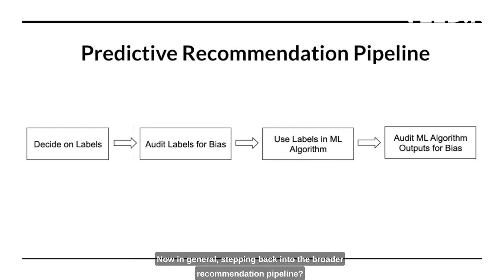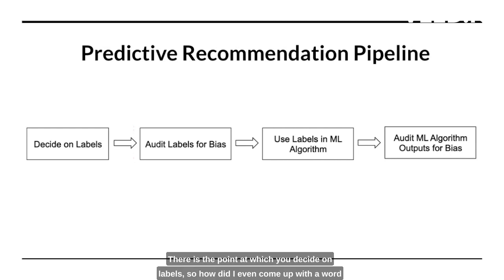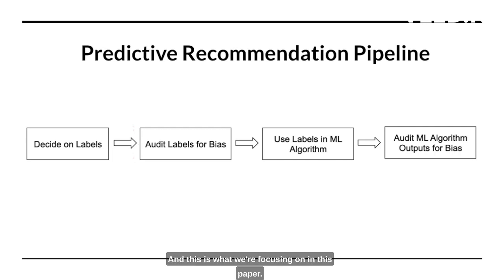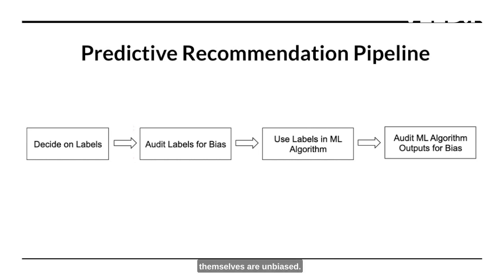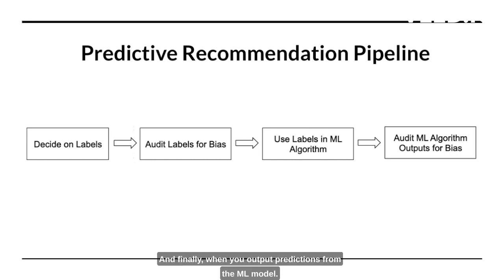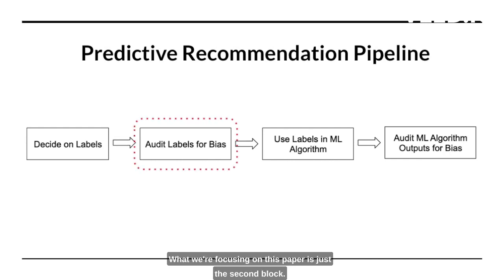Stepping back into the broader recommendation pipeline, there are lots of places where biases can creep in. There is the point at which you decide on labels — how did I even come up with the word cozy? There's a step at which you audit the data annotator for biases, and this is what we're focusing on in this paper. Then there is the actual step of making the ML model and ensuring the algorithm is unbiased. Finally, we output predictions from the ML model. What we are focusing on is just that second block: auditing data annotation by human labelers for bias.